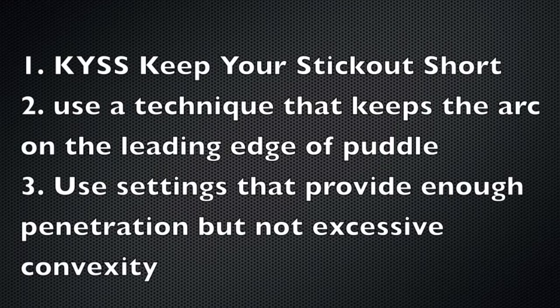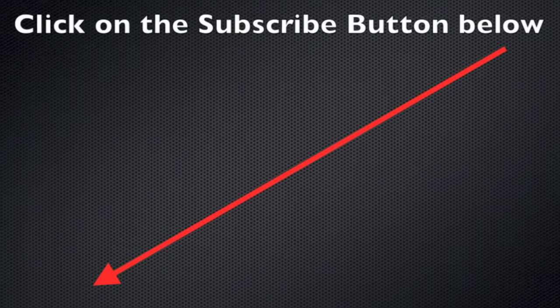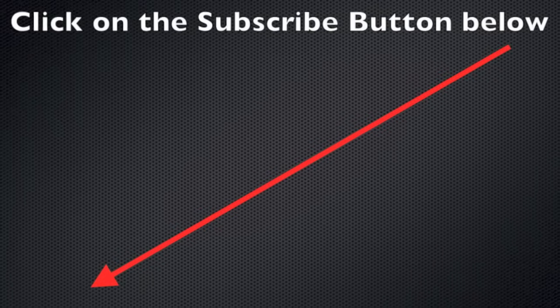So quick summary here for uphill MIG welding lap joints: keep your stick out short, that applies for any kind of short circuit MIG welding. Use a technique that keeps the arc on the leading edge of the puddle. Also use settings that provide enough penetration but still allow you to control the amount of convexity. Alright, that's it for today. Click on that subscribe button below if you like this sort of thing. We'll see you next week.